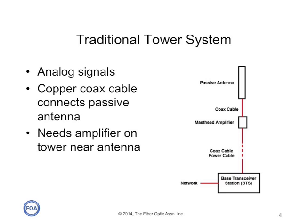Traditional cell towers use copper coax cables. The network feed goes into a base transceiver unit, which drives analog signals up the tower over a coax cable to a masthead amplifier, which is connected by a short coax cable to a passive antenna. The coax has very high attenuation, so the final amplifier is needed to provide adequate signal to drive the antenna.